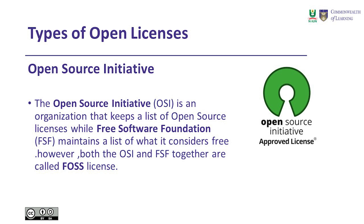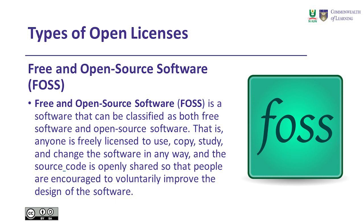The Open Source Initiative, OSI, is an organization that keeps a list of open source licenses, while the Free Software Foundation, FSF, maintains a list of what is considered free. However, both the OSI and FSF together are called FOSS licenses — that's FOSS, the Free and Open Source Software.